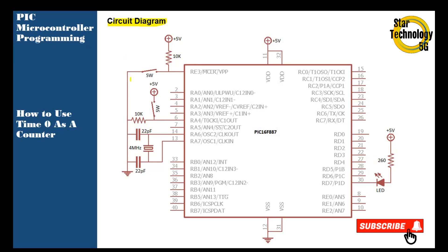Circuit diagram: here is the circuit diagram we will use in our project. Here is the PIC16F887 microcontroller. Pin number 14 and 13 interface with the 4 MHz crystal and we are using 22 pF capacitors. Here is the Timer 0 input, and here is the switch we will use to count the pulses. The RD7 pin is interfaced with the LED using current sinking mode. Whenever we press this button it will count, and when the count matches the variable stored in our project it will turn on the LED. Now we will draw this circuit in MPLAB and then test it.